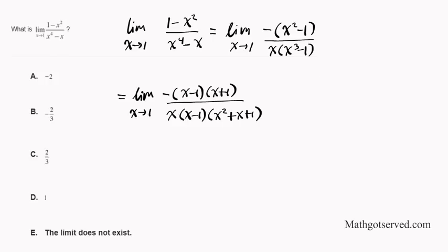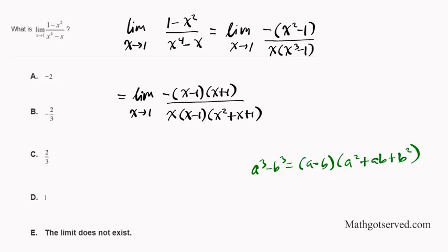The difference of cubes formula is: a cubed minus b cubed equals (a minus b)(a squared plus ab plus b squared). The sign pattern is: same, opposite, plus. In this case a is x and b is 1, which is how I arrived at the factored expression (x minus 1)(x squared plus x plus 1).